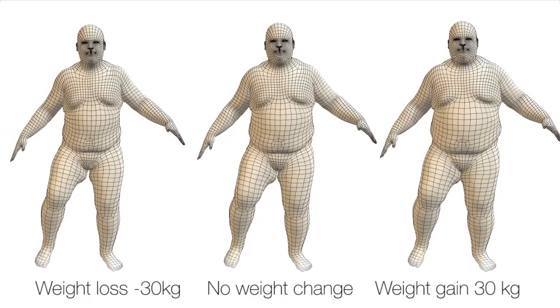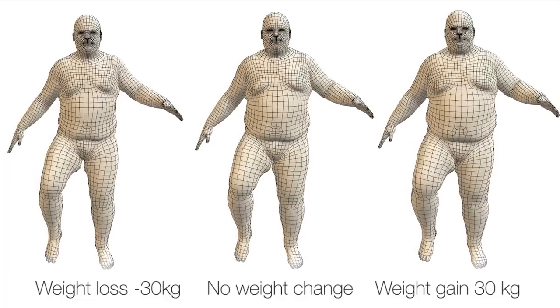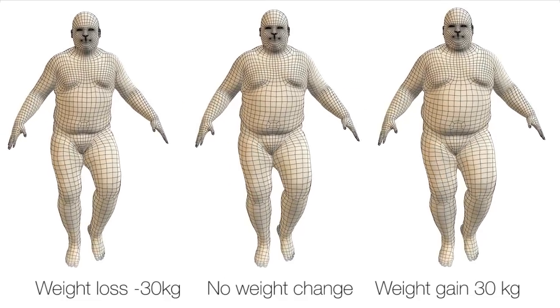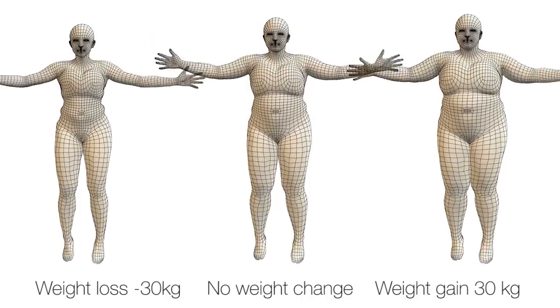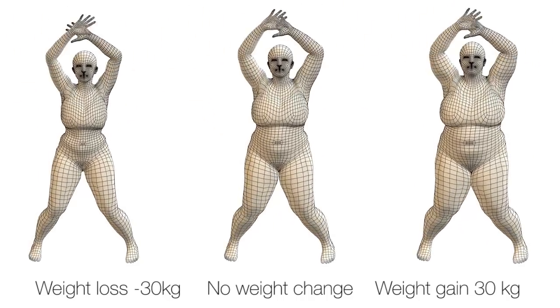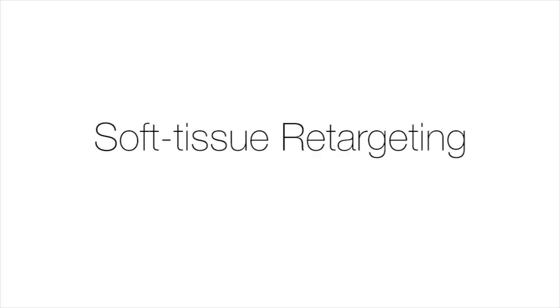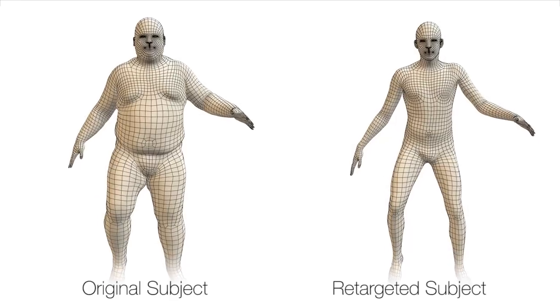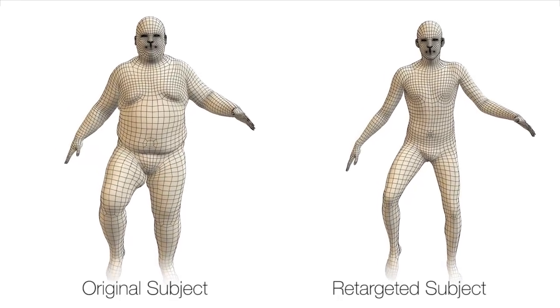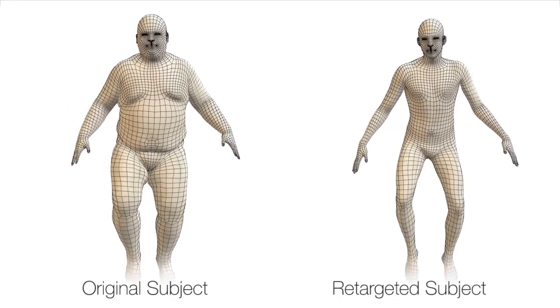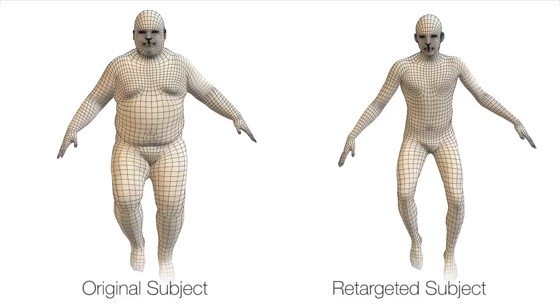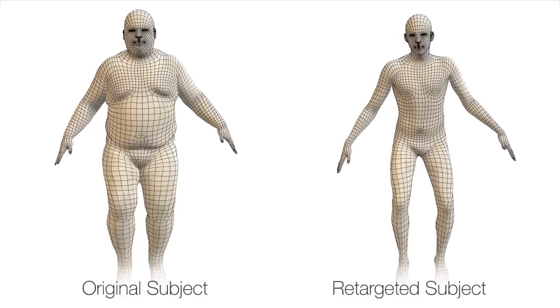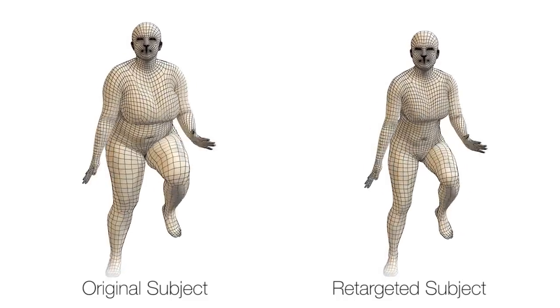Dyna also admits animator control. Given a subject, we change his weight while keeping his height fixed, which changes his BMI. Dyna adapts to varying BMI and produces different soft tissue deformations. We can also mix and match the base body shape and the shape used for soft tissue dynamics to create novel effects — for example, using the body shape of a heavy man to estimate soft tissue deformations for a skinny man in motion, making his body look very soft. This soft tissue retargeting can be used to create artistic or exaggerated effects.